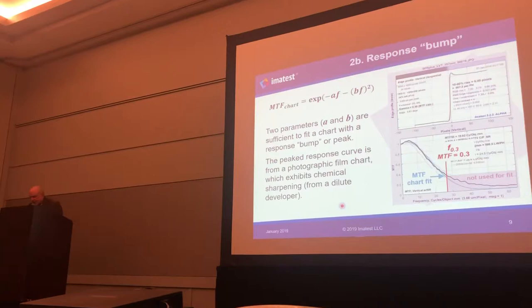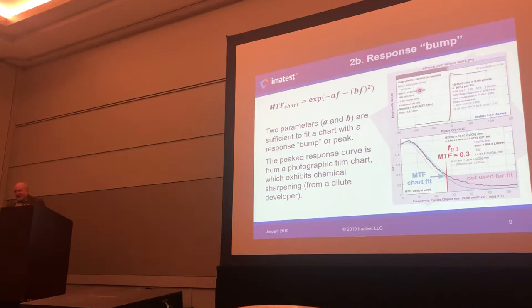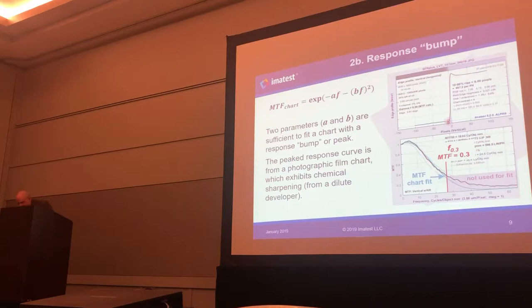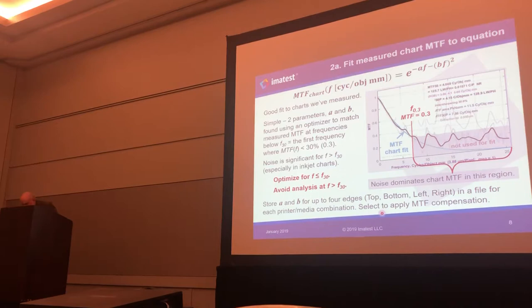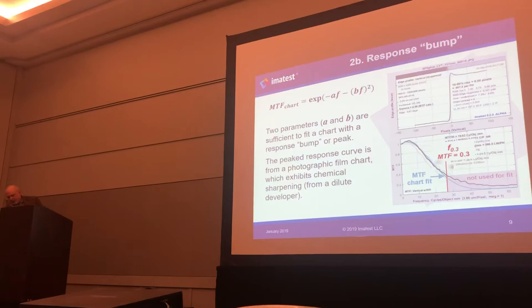Here's another example of a fit to this function, for an LVT color film chart — I believe it's a Fuji Chrome color transparency film. There's an interesting effect in certain films where you actually get chemical sharpening near edges, having to do with how developers are depleted. That chemical sharpening causes a little bit of a bump in the MTF response. As you can see, this two-parameter model is a pretty decent fit. The cyan is the fit; the black is the actual data. We have a pretty good fit below the 0.3 number. We could have gone above 0.3, but then we'd have to worry about noise enhancement and a few other effects.